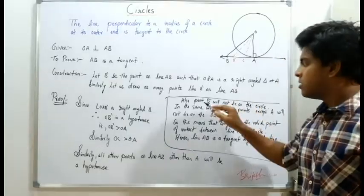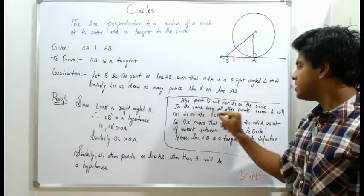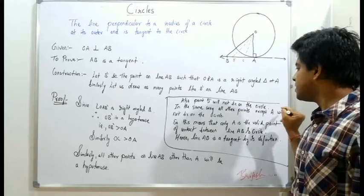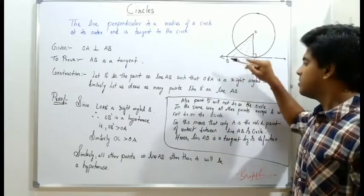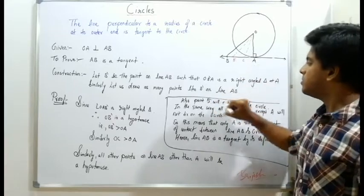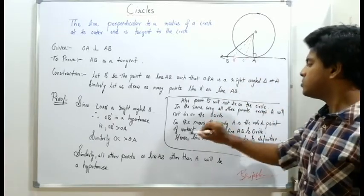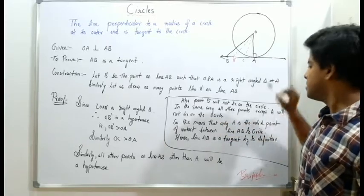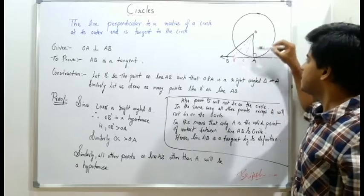Point B dash will not lie on this circle. In the same way, all other points except A will not lie on this circle. Any point you take - point B dash, point C, any points - this means that only A is the valid point. A is the valid point of contact between AB and the circle.